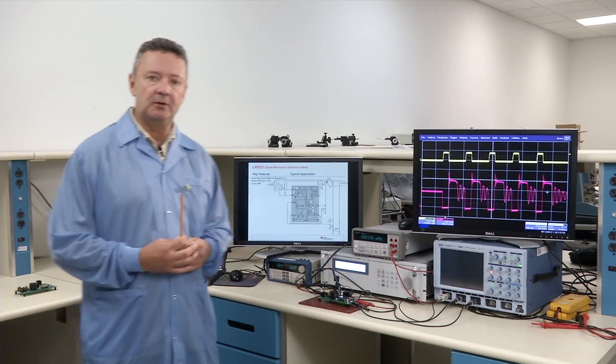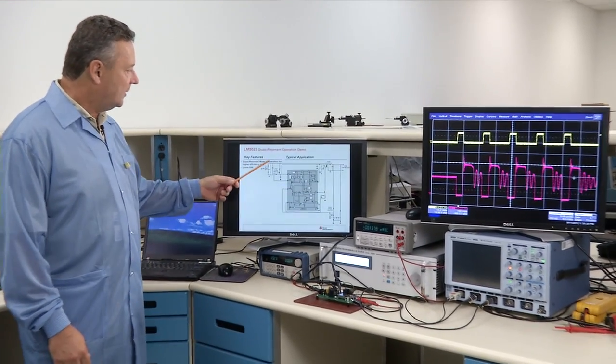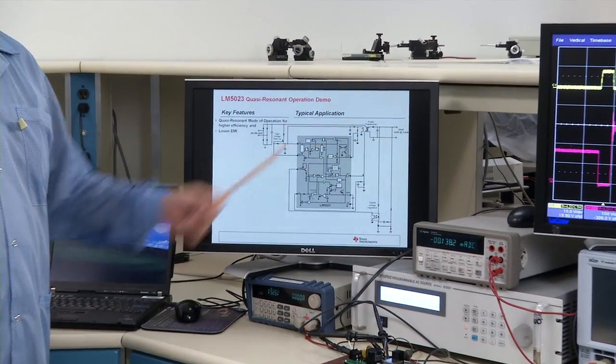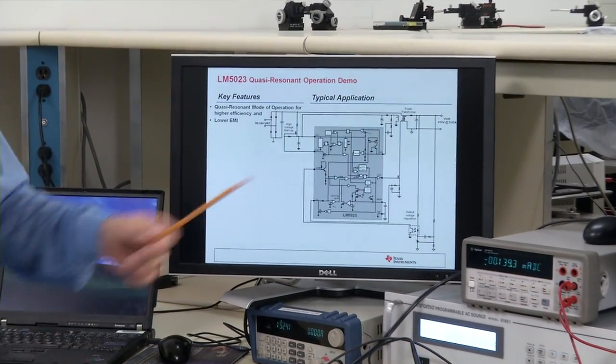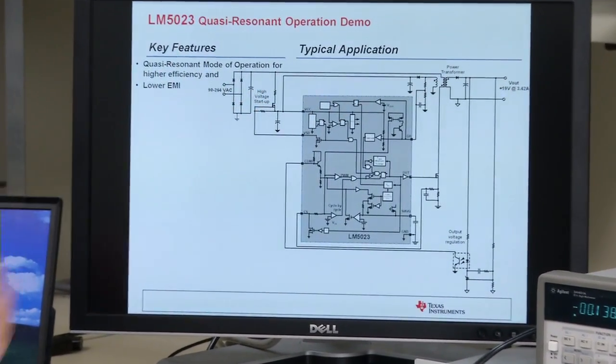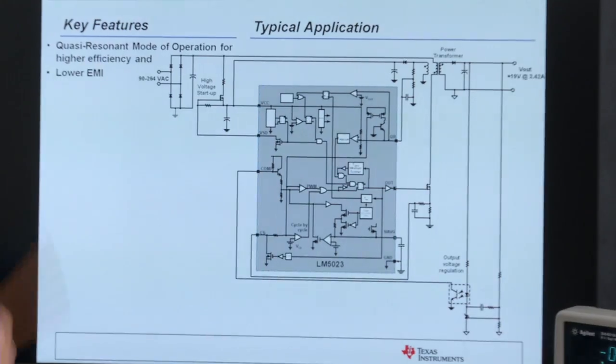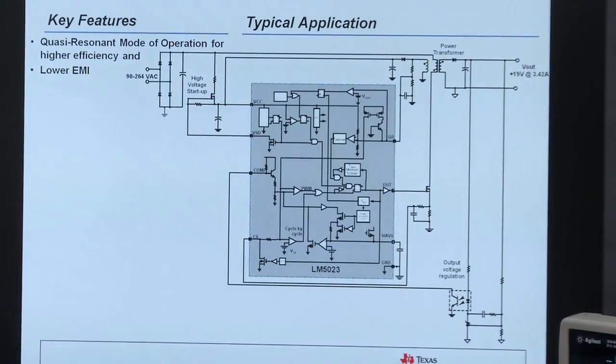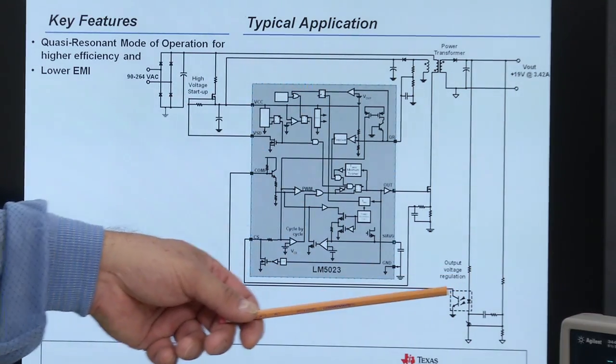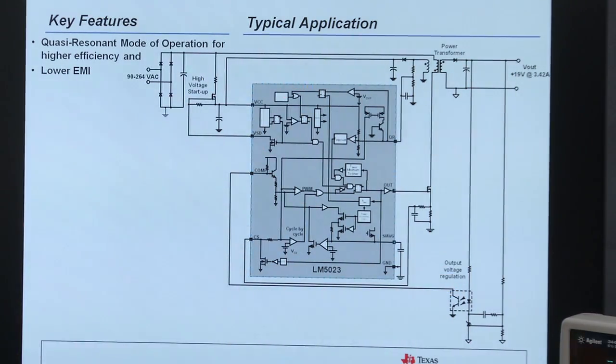We're going to start out by looking at the typical application schematic. We take our rectified input line voltage and filter it. We have our power transformer that has three windings: the primary winding, an auxiliary winding which provides bias power to the controller, and our output winding which provides power to the load. We sense the output voltage, feed it back, and provide an error signal to the compensation pin.